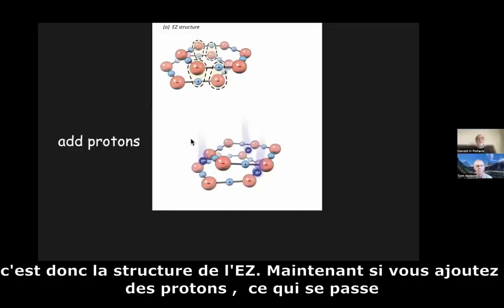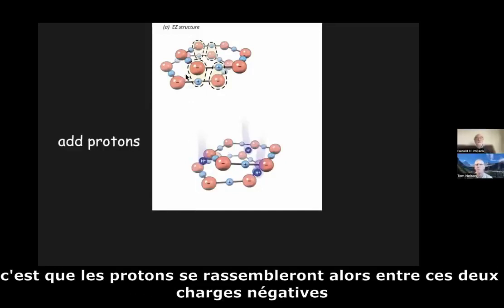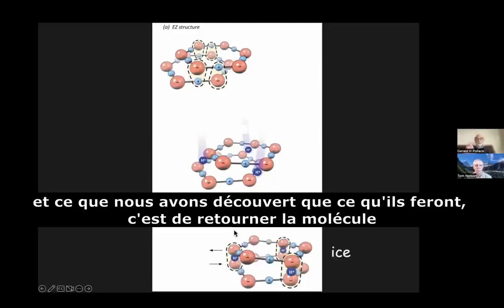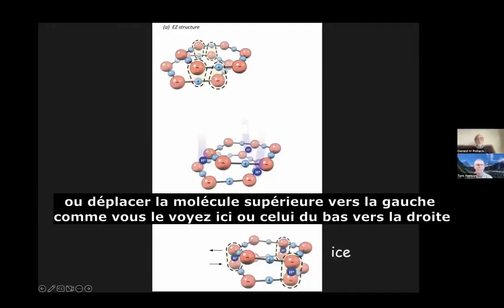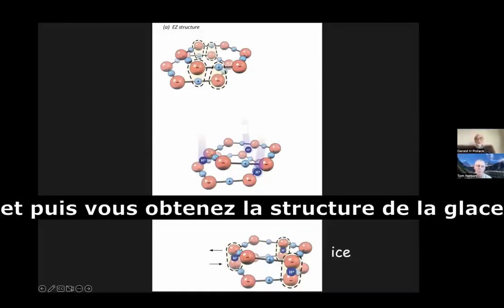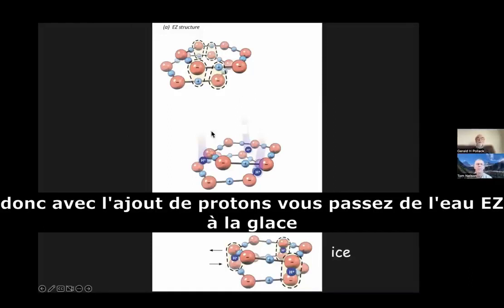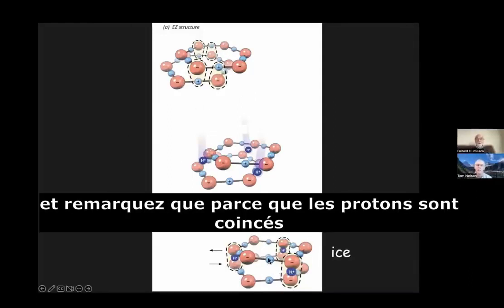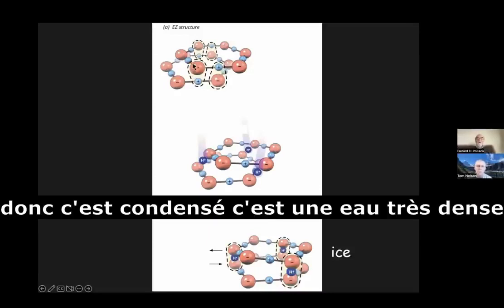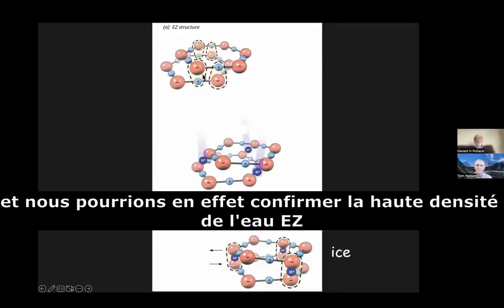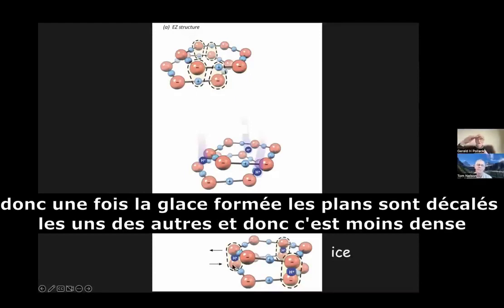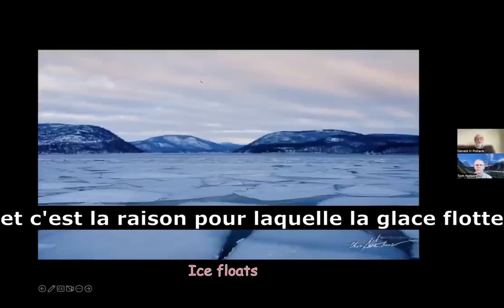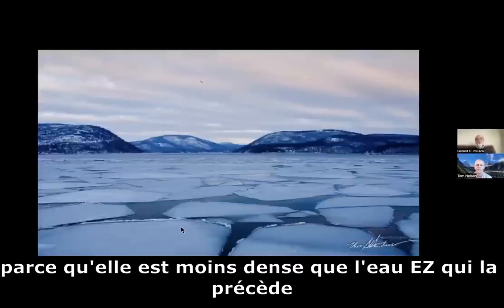Now, if you add protons to EZ, what happens is that the protons will gather in between these two negative charges. What they'll do is flip the molecule — shift the upper one toward the left or the lower one toward the right — and then you get the structure of ice. With the addition of protons, you go from EZ water to ice. Because the protons are stuck in between, these two planes are separated more, making it less dense. We could confirm the high density of EZ water. But once ice forms, the planes are shifted apart, so it's less dense, and that's the reason why ice floats — because it's less dense than the EZ water that just preceded it.